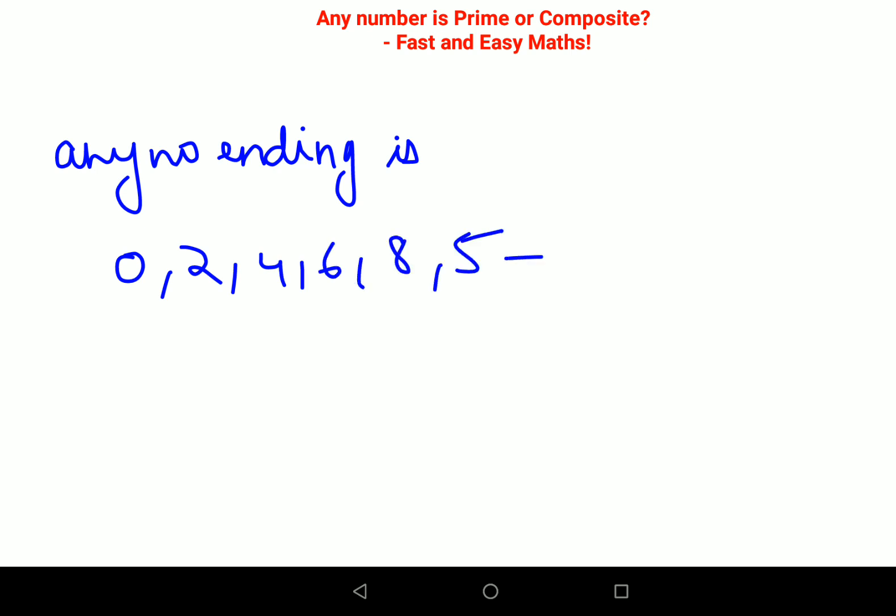Basically, except for single digit 2 and except for single digit 5, all the rest are called as composite numbers. This is very basic, you need to always remember this.